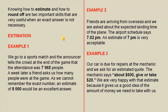Estimation. Example 1. We go to a sports match and the announcer tells the crowd at the end of the game that the attendance was 7,965 people. A week later a friend asks us how many people were at the game. As we cannot remember the exact amount, an estimate of 8,000 would be an excellent answer.